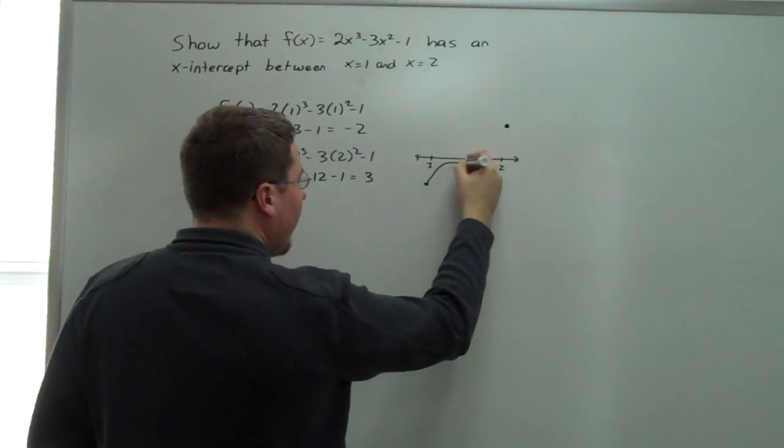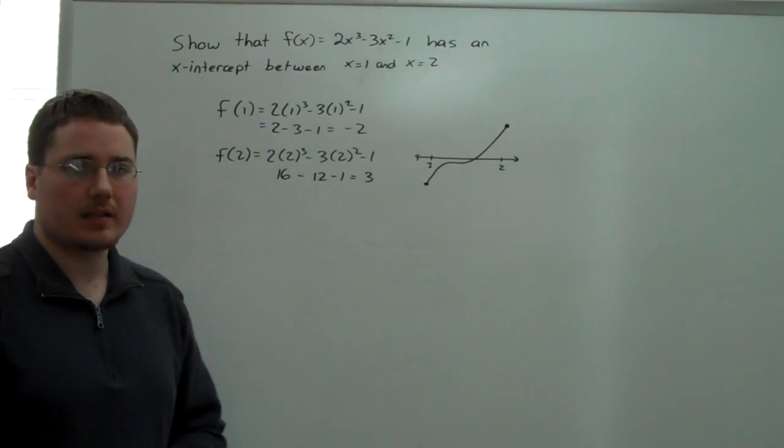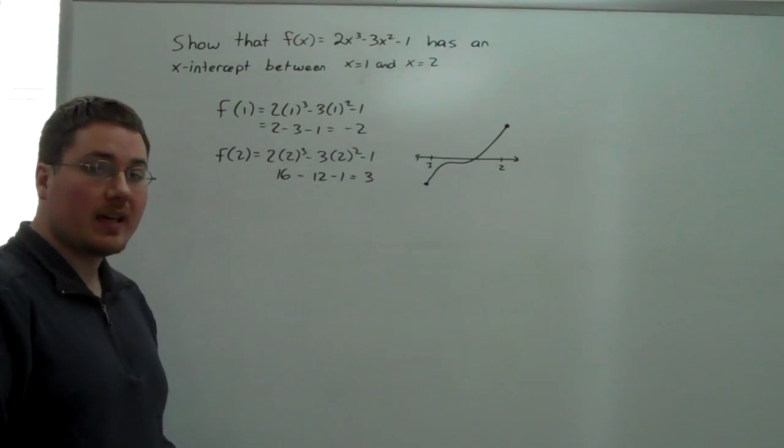So, somewhere, no matter what, because polynomials are nice and continuous, it has to cross the x-axis between 1 and 2 by the intermediate value theorem.